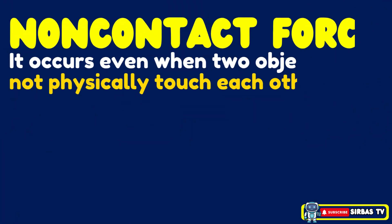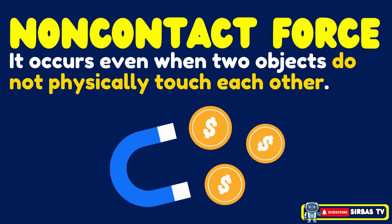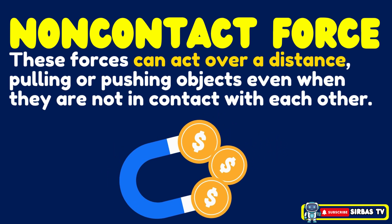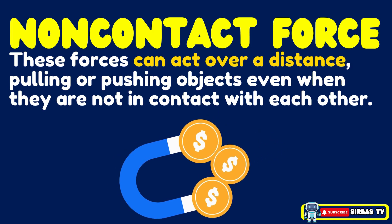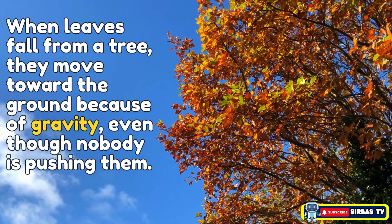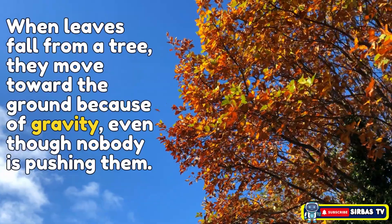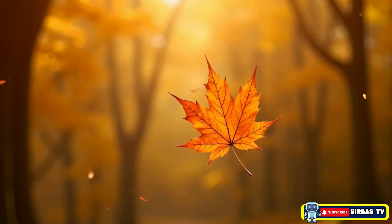A non-contact force occurs even when two objects do not physically touch each other. For example, a magnet can attract coins without any direct contact. These forces can act over a distance, pulling or pushing objects even when they are not touching. When leaves fall from a tree, they move toward the ground because of gravity even though nobody is pushing them. The Earth's pull acts at a distance, causing the leaves to fall naturally.